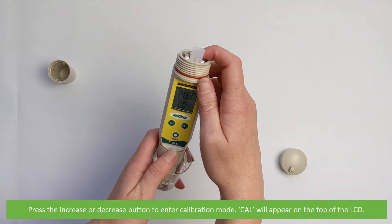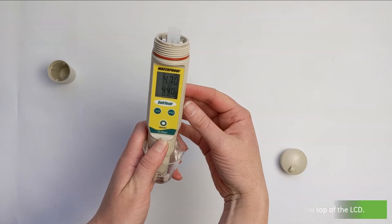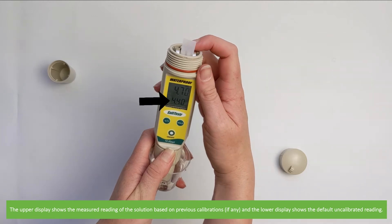Press the increase or decrease button to enter calibration mode. CAL will appear on the top of the LCD. The upper display shows the measured reading of the solution based on any previous calibrations, and the lower display shows the default uncalibrated reading.